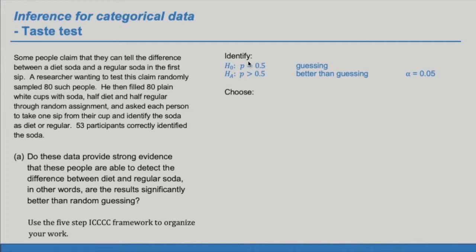Next, we need to choose the test we are using. So because this is a one proportion, there's one proportion and we're using a test of significance, we will choose one proportion z test.